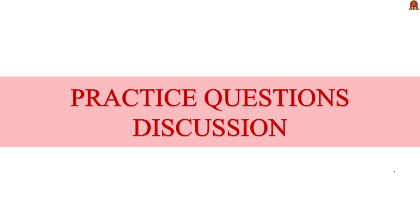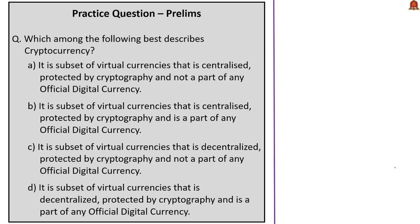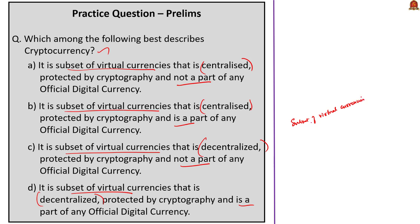Moving on to practice questions. The first question asks which among the following best describes cryptocurrency. Cryptocurrency is: a subset of virtual currencies; decentralized with no central authority; protected by cryptography; and not a part of any official digital currency. Official digital currency means the digital rupee or foreign digital currency. Therefore, option C is the correct answer.